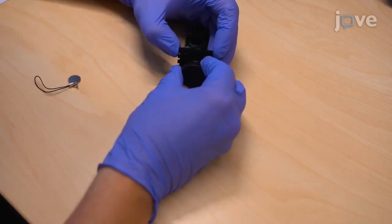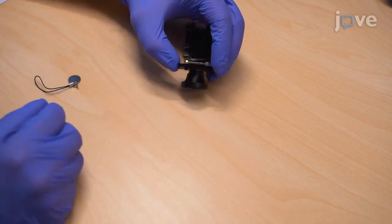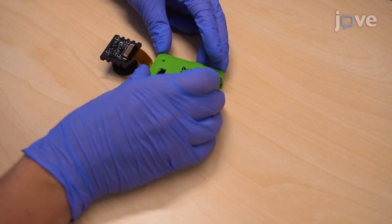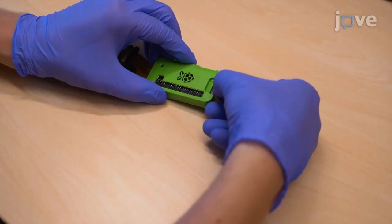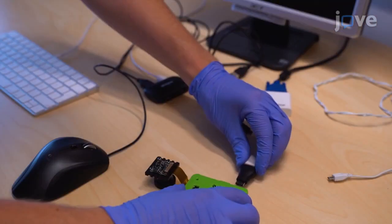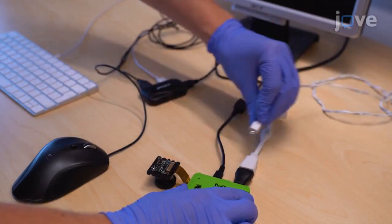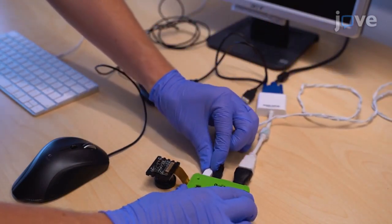Attach the fisheye lens to the metal ring on the camera stand. Place the microcomputer in the plastic case and insert the listed microSD card. Then, connect a monitor, keyboard, and mouse to the microcomputer and start it by connecting its power supply.